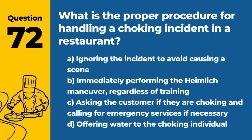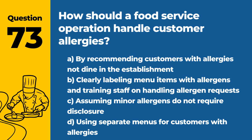Question 72. What is the proper procedure for handling a choking incident in a restaurant? The answer is C: Asking the customer if they are choking and calling for emergency services if necessary. Correct response can be life-saving and should follow appropriate training.